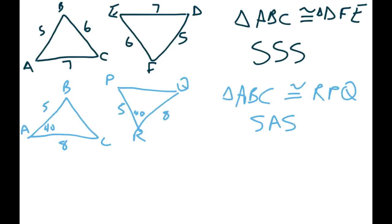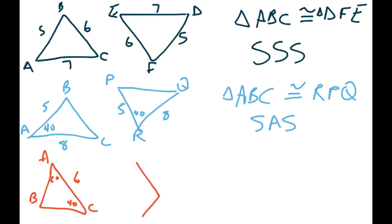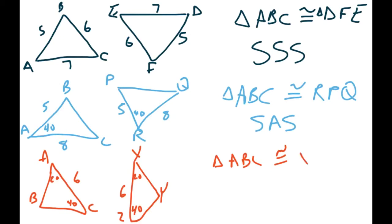There's one more that works — Angle-Side-Angle (ASA). You have a triangle with two angles given, say 20 degrees and 40 degrees, and the side in between them is 6. Calling it triangle ABC, and another triangle XYZ with the same 20 degrees, 40 degrees, and side 6, those are also congruent. Triangle ABC is congruent to triangle XYZ by Angle-Side-Angle — two angles and the side in between them.